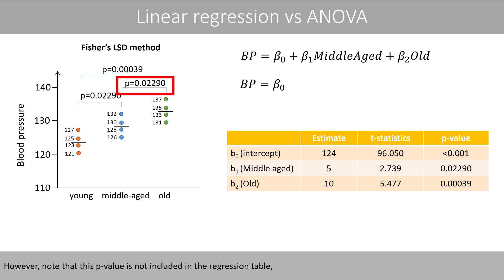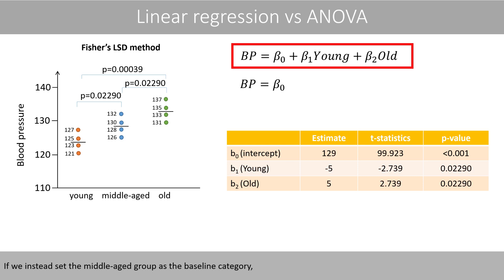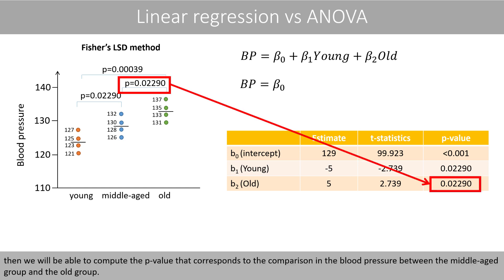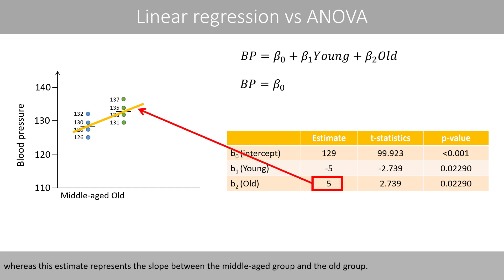Note that the comparison between the middle-aged group and the old group is not included in the regression table, because the different categories are only compared to the baseline category. If we instead set the middle-aged group as the baseline category, then we will be able to compute the p-value corresponding to the comparison of blood pressure between the middle-aged group and the old group. This estimated parameter corresponds to the slope between the middle-aged group and the young group, whereas this estimate represents the slope between the middle-aged group and the old group.